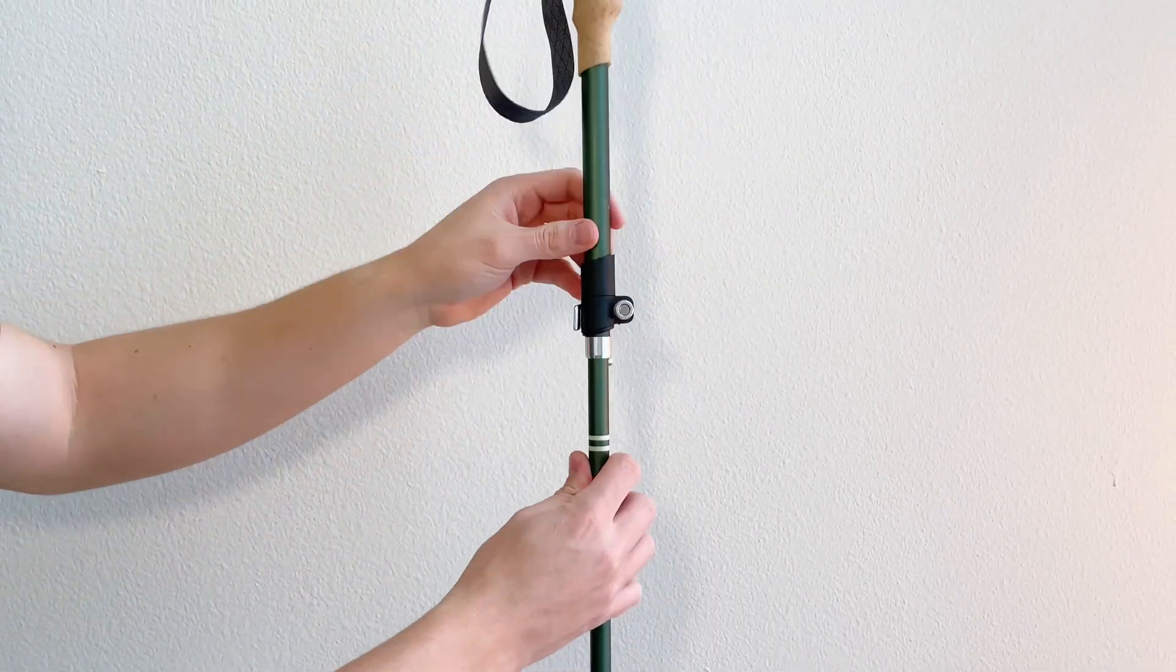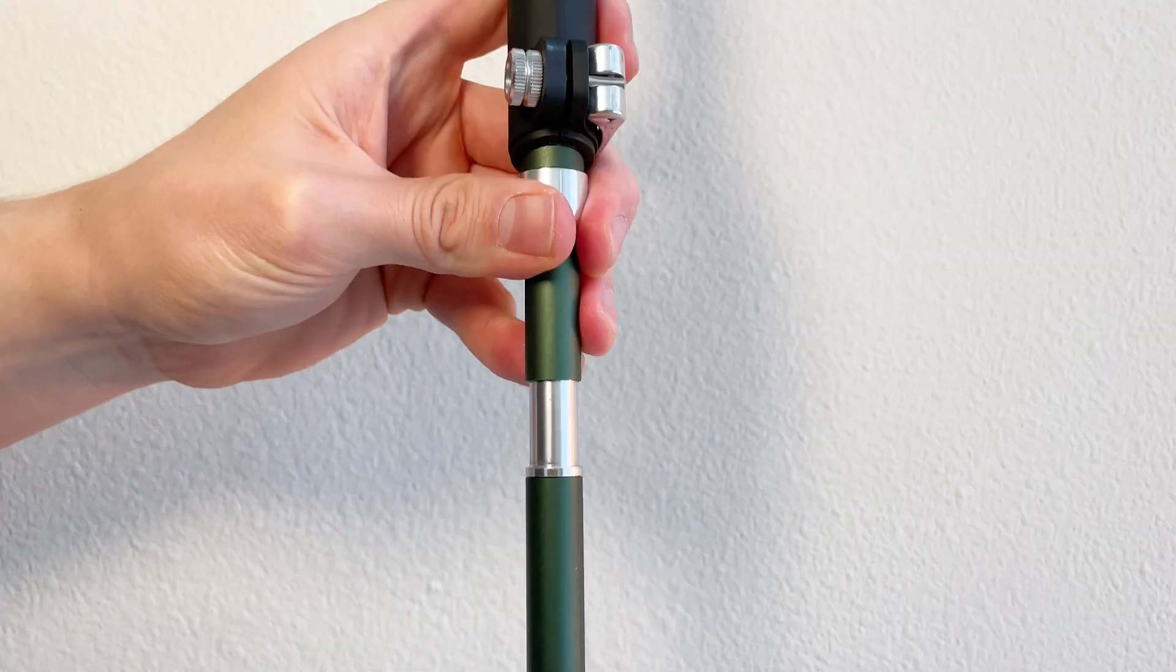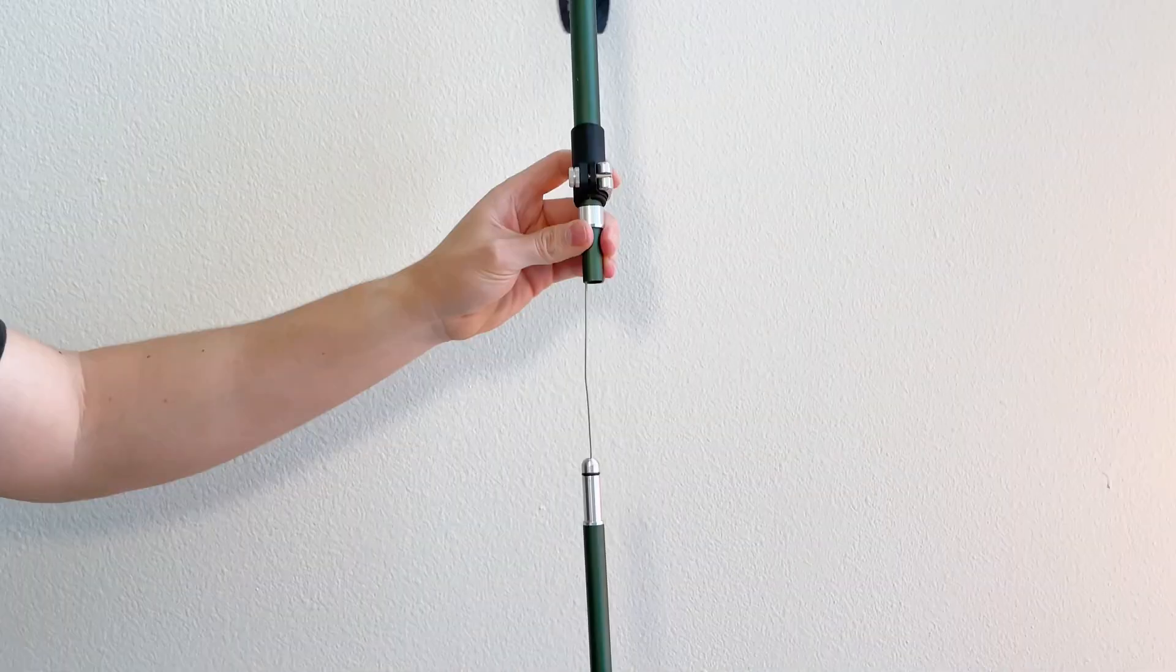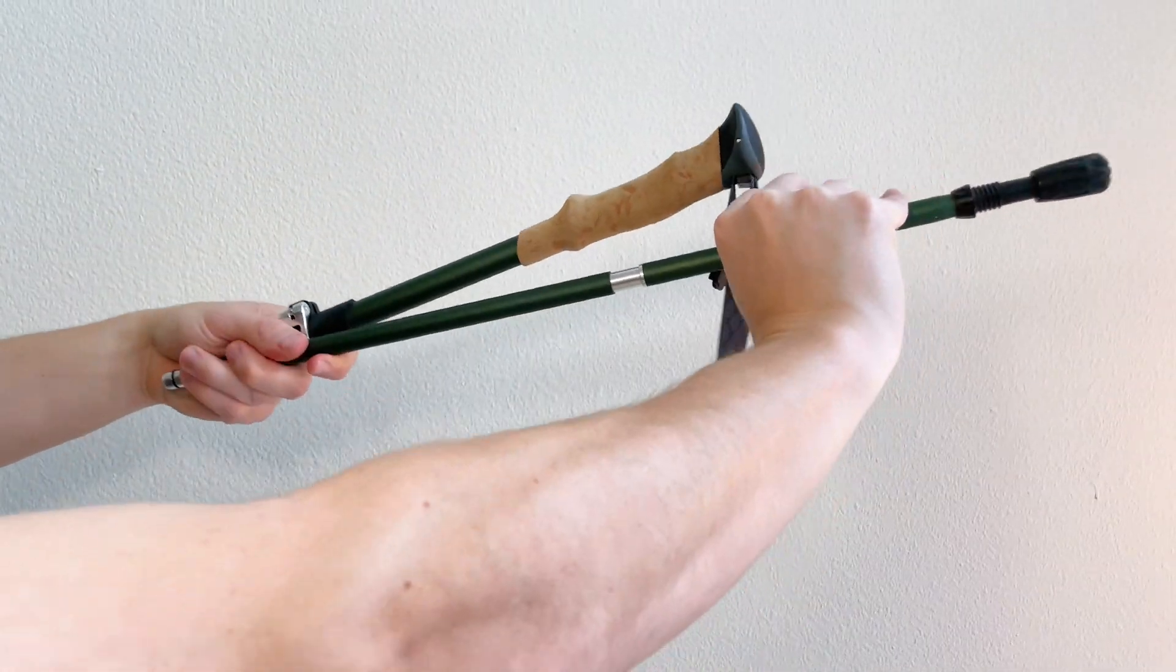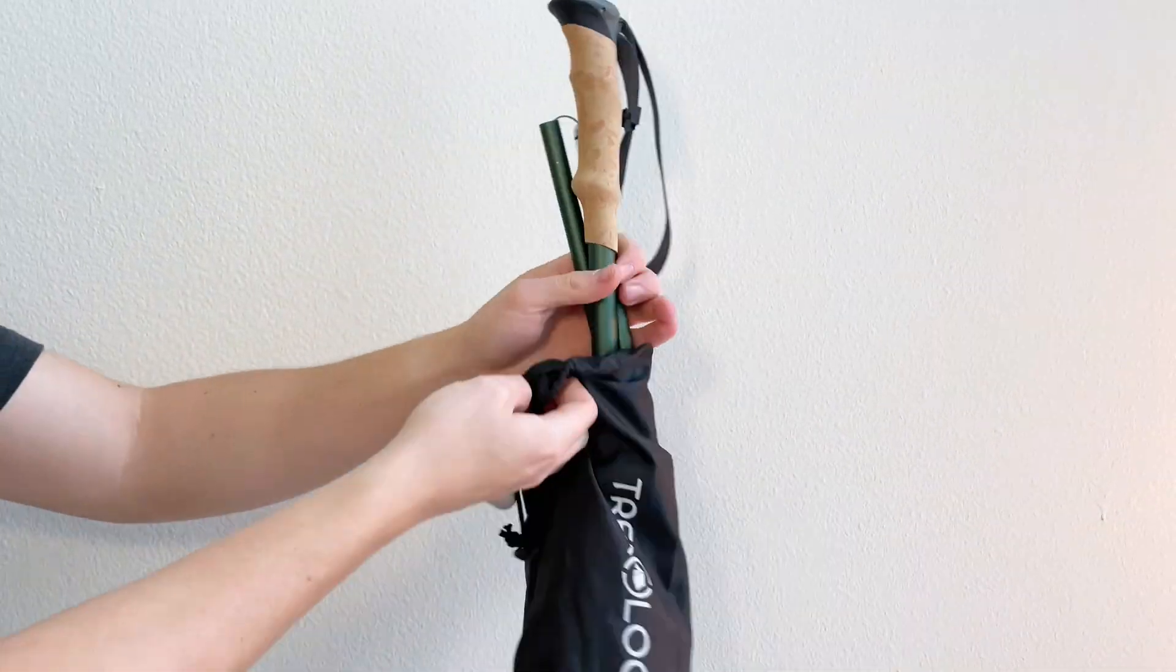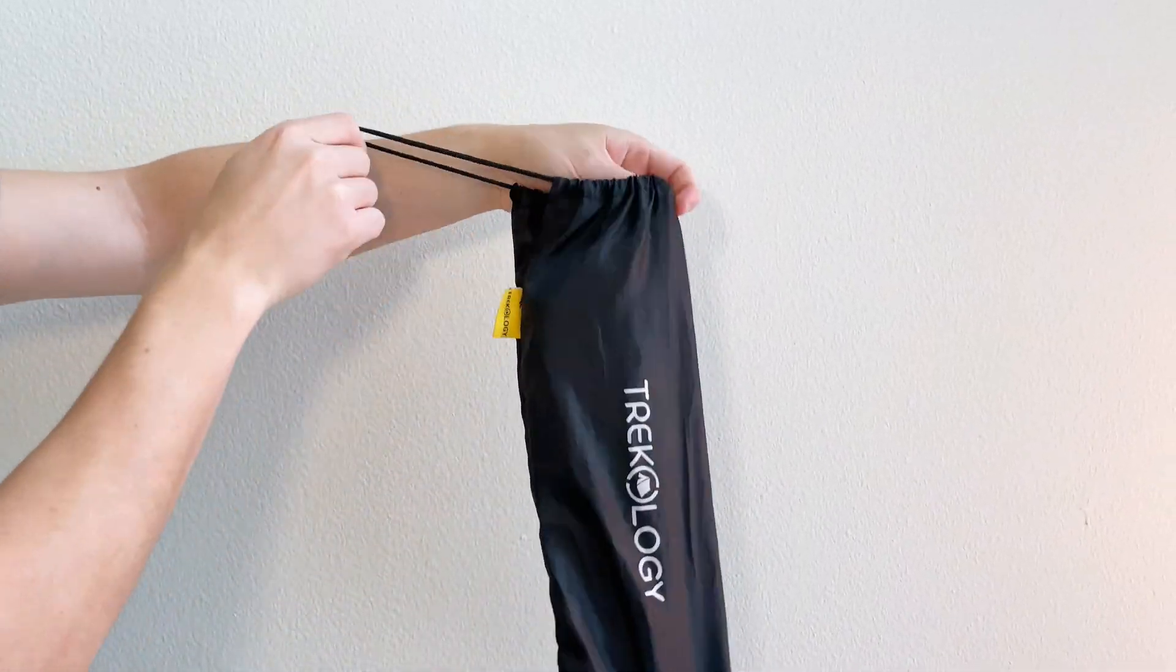The poles offer comfort through sweat-absorbing EVA foam grips, besides shock absorption, which reduces the risk of knee injuries on steep terrain. They also enhance stability on uneven or slippery surfaces, making them valuable companions for hikers.